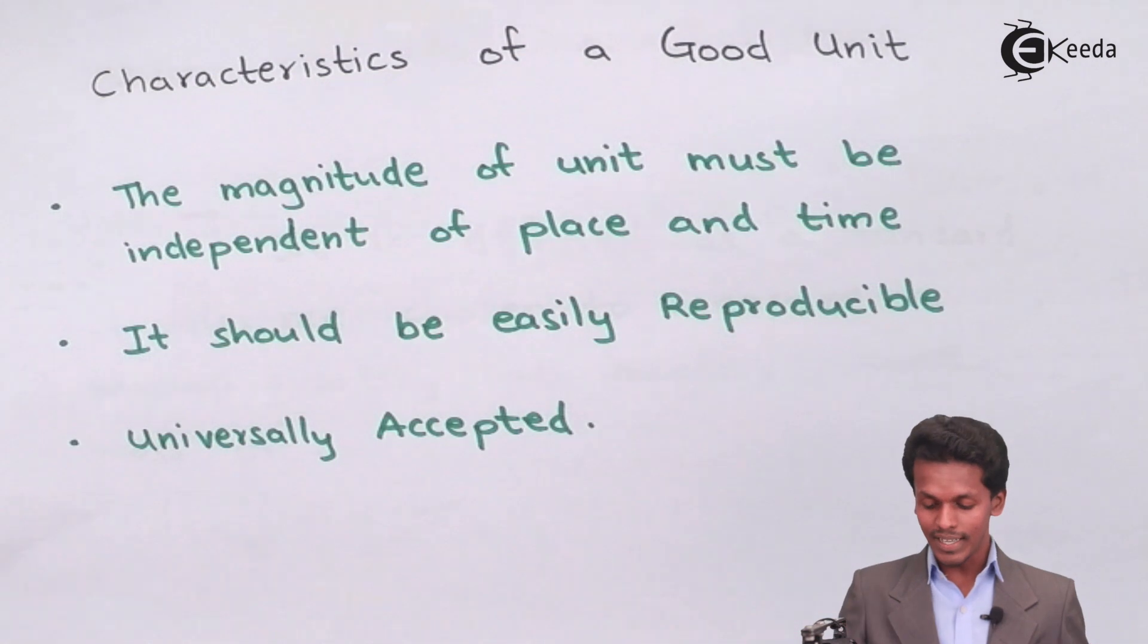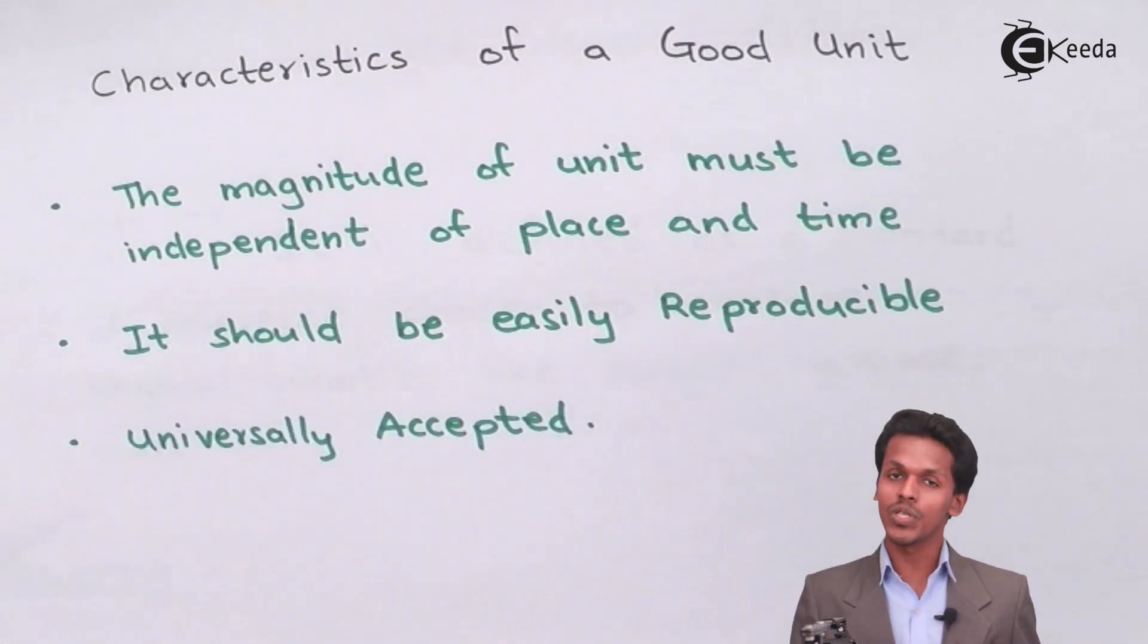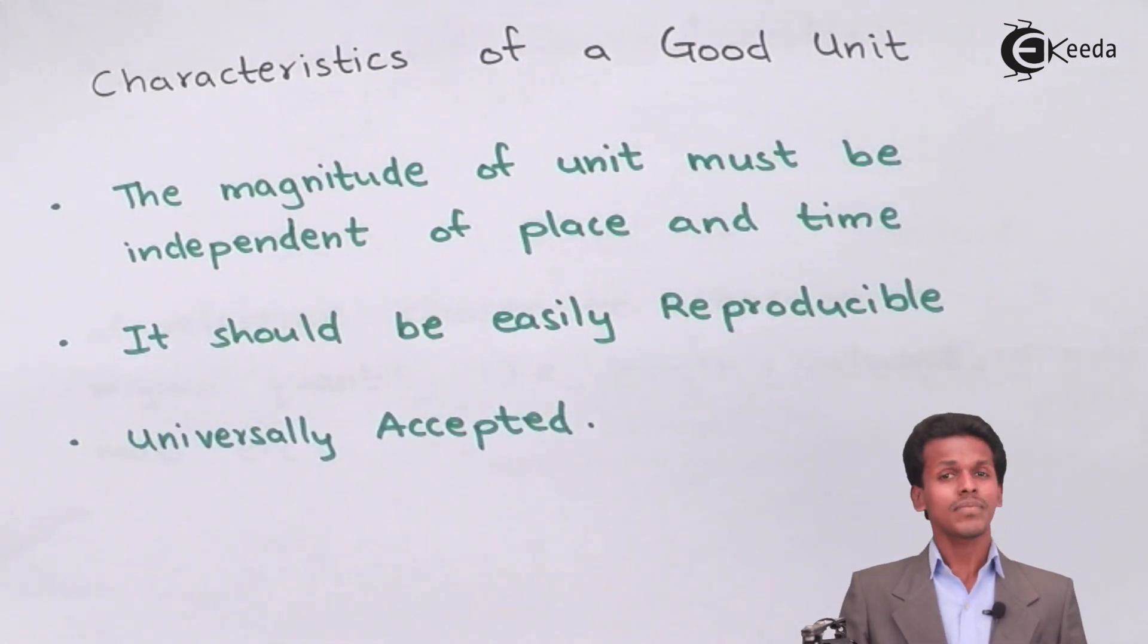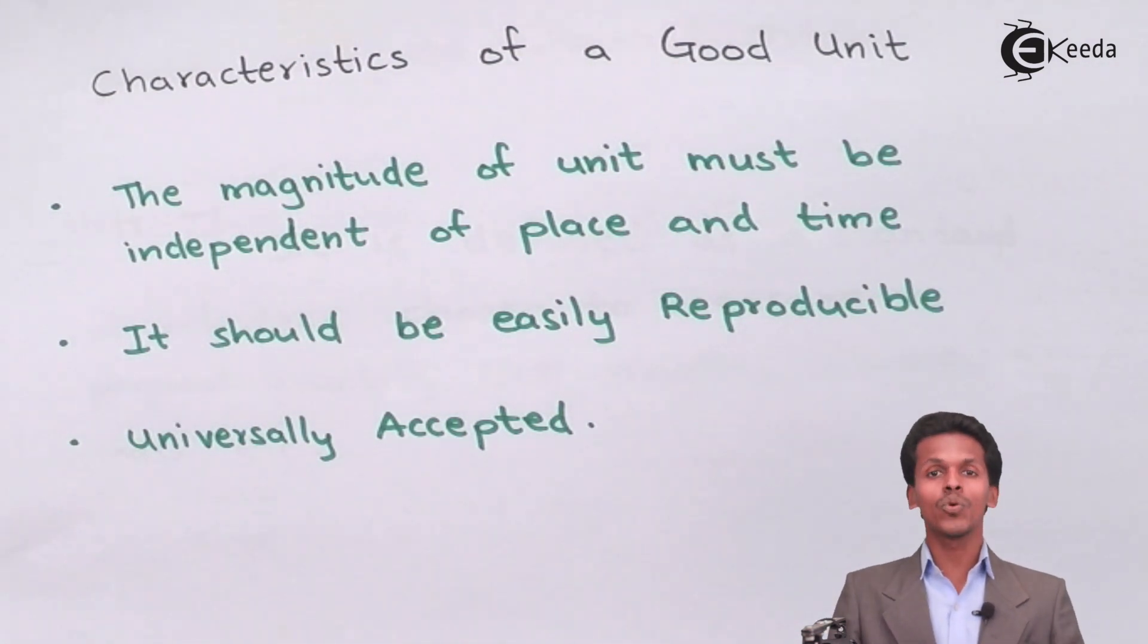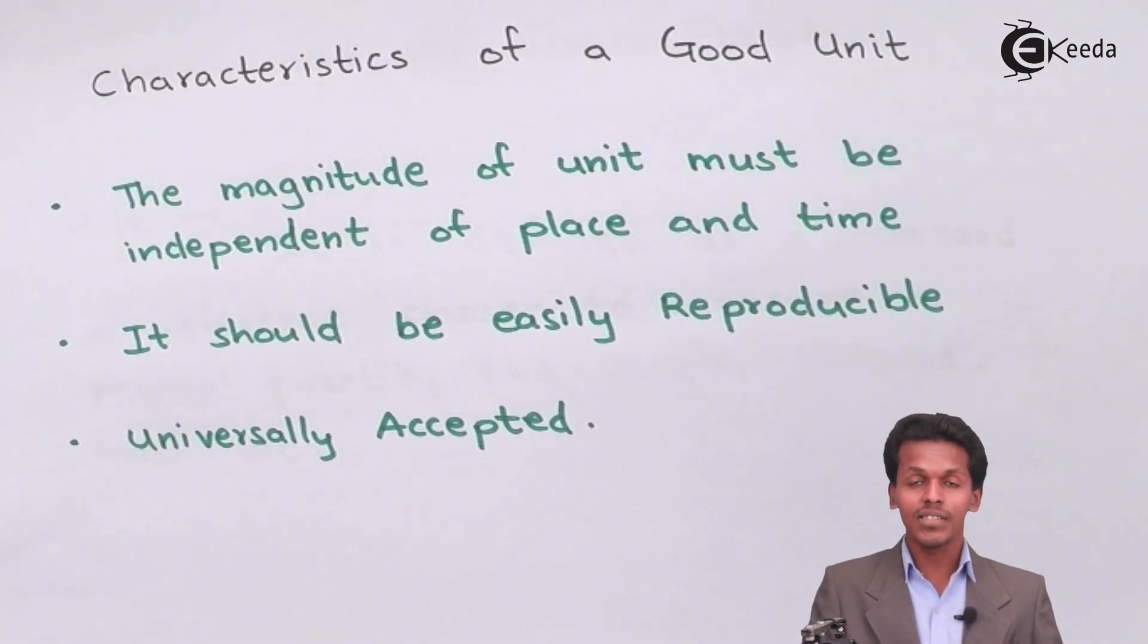Now talking about the next one, it should be easily reproducible. That is, suppose if you have a scale of one meter, so I have mentioned the unit as meter in this case, if you go to another place or if you want to make that scale in a new duplicate form, you have to measure a wooden piece as one meter only.